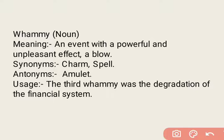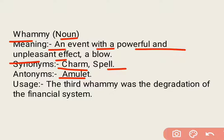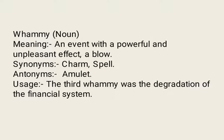Next word is 'vemi'. Vemi is a noun. Iska matlab hota hai an event with a powerful and unpleasant effect — koi bhi aisa event ya cause jiski wajah se powerfully koi evil cheez ho rahi ho, koi unpleasant effect arise ho rahi ho, a blow kind of thing. Synonyms: charm, spell. Antonym: amulet — the thing which brings good luck, while vemi is about the thing which brings bad luck or evil things. Example: The third vemi was the degradation of the financial system.